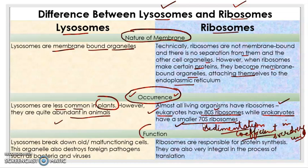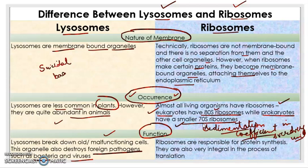Moving forward, on the basis of function: lysosomes break down old or malfunctioning cells. This organelle also destroys foreign pathogens such as bacteria and viruses. Lysosomes are also known as suicidal bags because they break down old or malfunctioning cells and destroy foreign pathogens such as bacteria and viruses.